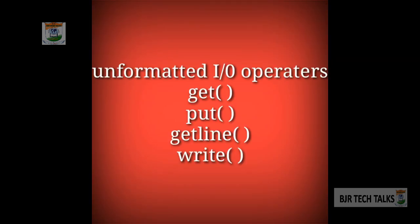In C++, there are four types of Unformatted IO functions: get, put, getline, and write. The get and put functions are used to take or output a single character — they do not take any string, which is a group of characters. The getline and write functions are used to take a line or sentence, which is a group of characters. Now I will explain these functions in depth.